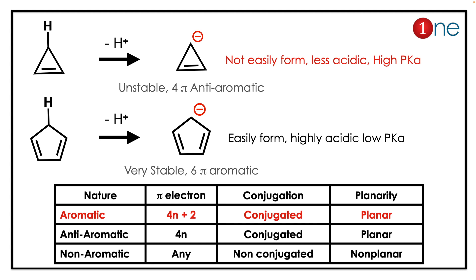The answer lies in the aromaticity created by the intermediate after loss of an H+ ion. The first one becomes anti-aromatic because of four pi electrons, so it is highly unstable and does not form at all — meaning it will have a high pKa. The second one forms an aromatic cation, which is very stable and aromatic due to six pi electrons, so it is easily formed.